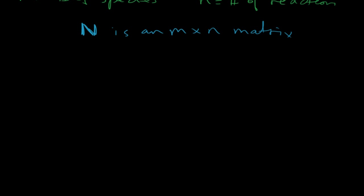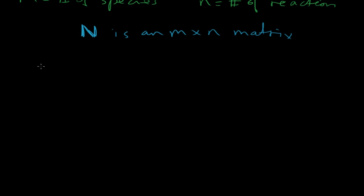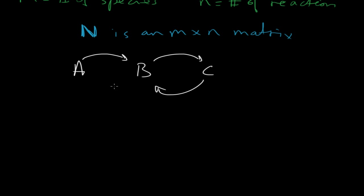Let me show you another example of a stoichiometry matrix. This time we have a slightly different system — three species again, but this time we're going to form some loops. This could be, for example, a double phosphorylation cycle, where A, B, and C are proteins. The reaction rates are V1, V2, V3, and V4. Let's write out the stoichiometry matrix.